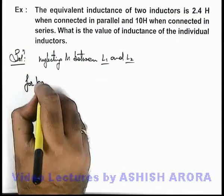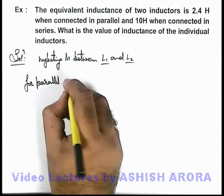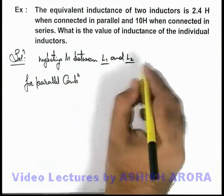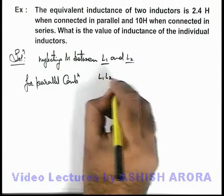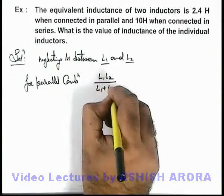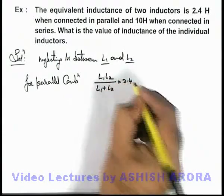We can write for parallel combination, the equivalent is L1*L2 over L1 plus L2, which can be written as 2.4.